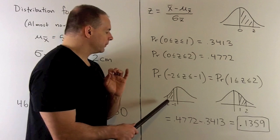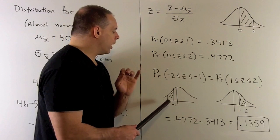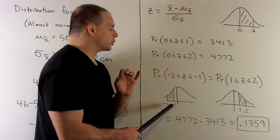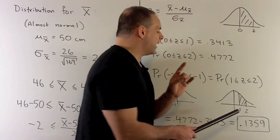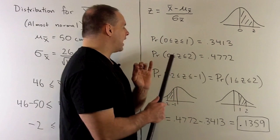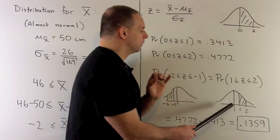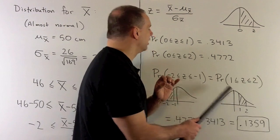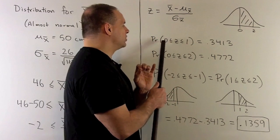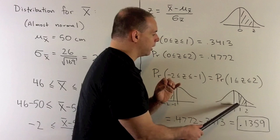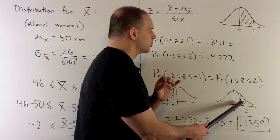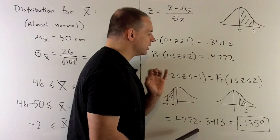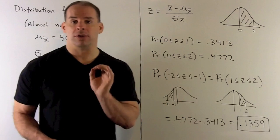If you notice, the area between minus 2 and minus 1 is equal to the area between 1 and 2. I take the area between 0 and 2, that's this piece here, subtract off the area between 0 and 1, that's that white piece there. That's going to give us the area that we're interested in. We're just going to take the difference here. That gives us our answer of 0.1359.